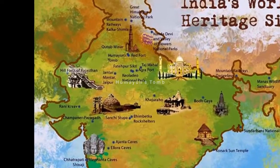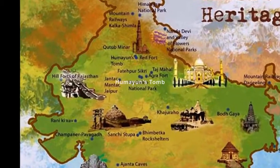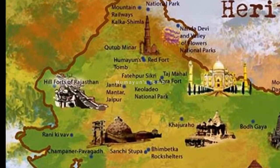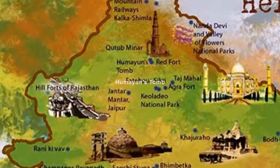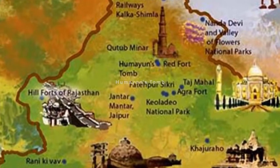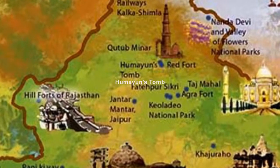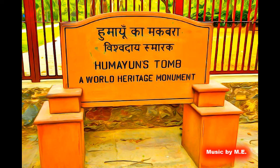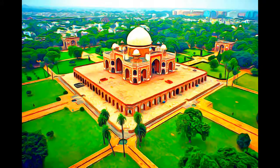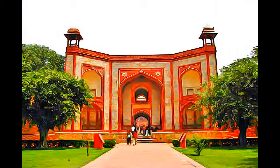Humayun's tomb was built in the 1560s, with the patronage of Humayun's son, the great Emperor Akbar. The tomb is of particular cultural significance, as it was the first garden tomb on the Indian subcontinent.